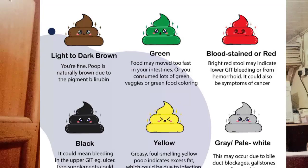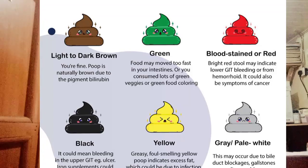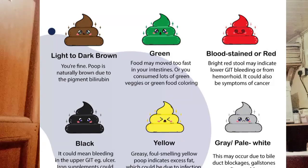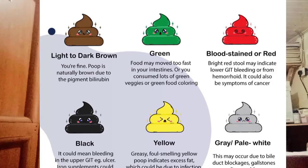The presence of blood and mucus or pus in the stool should also be noted. In the case of amoebic dysentery caused by Entamoeba histolytica, blood and mucus can be present in the stool. Campylobacter, E. coli, Shigella, and Salmonella can also lead to blood in the stool, as can Clostridium species.